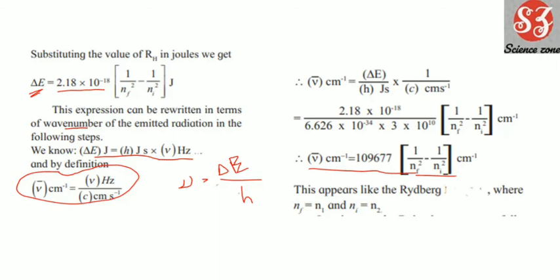The final formula for wave number is: ν̄ = 109677 × (1/Nf² − 1/Ni²) cm⁻¹, where Nf = N1 and Ni = N2. This constant 109677 cm⁻¹ is Rydberg's constant for hydrogen.